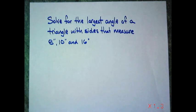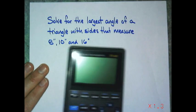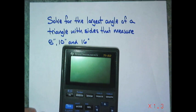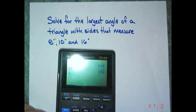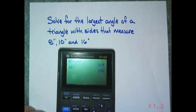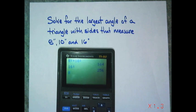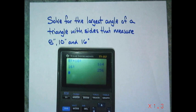The first thing I would want you to check is whether this is a right triangle. We've looked at this before. 8 squared is 64, plus 10 squared is 100, giving 164. And 16 squared is 256. So the hypotenuse squared is larger than the sum of the two legs squared, which means this is an obtuse triangle.